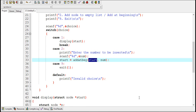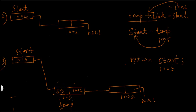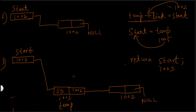Passing the value of start is important because start is the only way to access the linked list — it is the only variable that knows the address of the first node. Without it, we cannot traverse the list. So start is the entry point into the linked list.